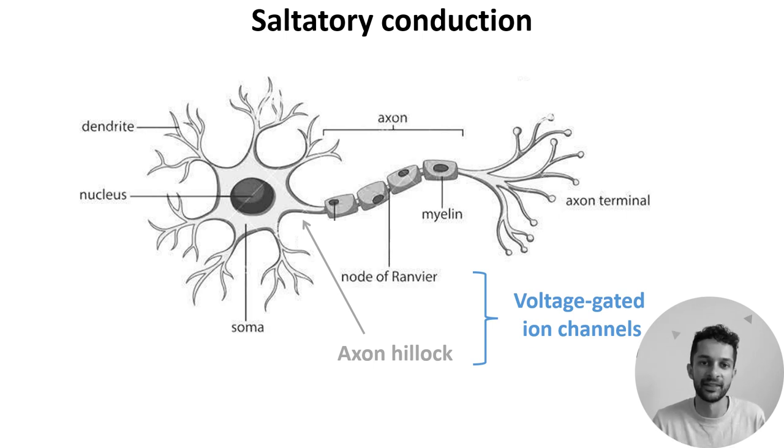However, without any help this signal would just dissipate as it traveled the length of the axon. So how do neurons prevent this? The solution is to insulate the axon using a fatty substance called myelin.